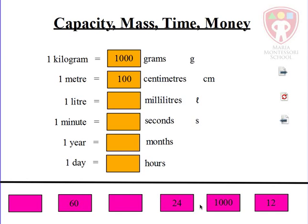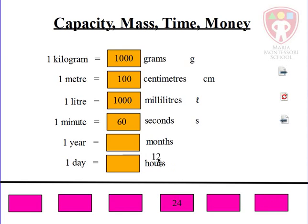One liter is how many milliliters? A thousand milliliters make a liter. One minute equals 60 seconds. One year equals 12 months. And one day equals 24 hours. Make sure you are well aware of this, because we shall use this in subsequent lessons.